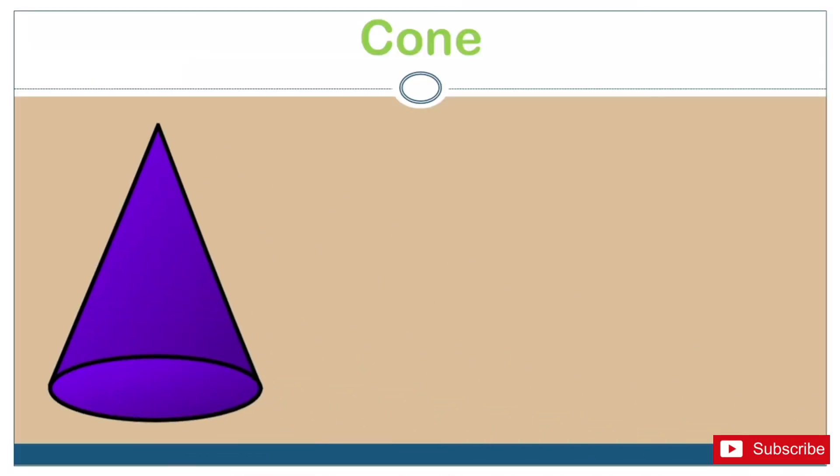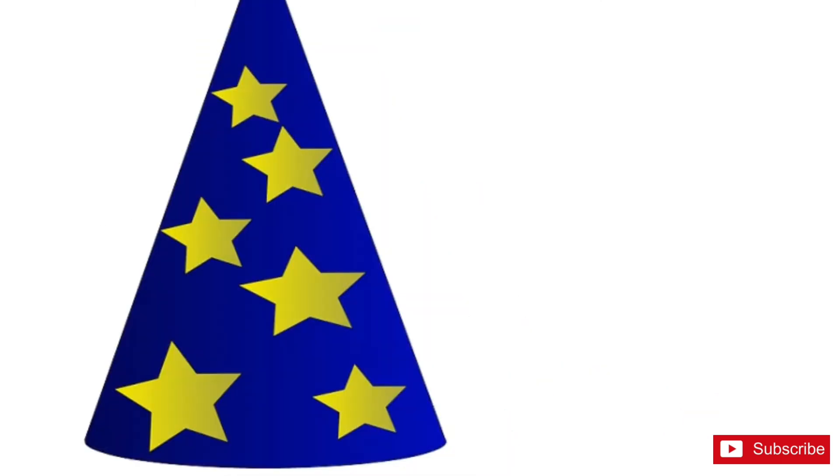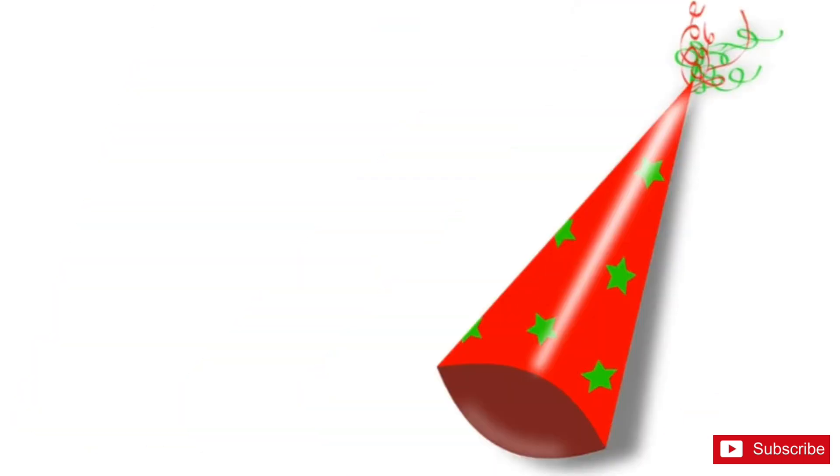This is a cone. A cone has two faces, one flat face and one curved face. It has one vertex and one edge. A cone can stand on its flat face and roll on its curved face.